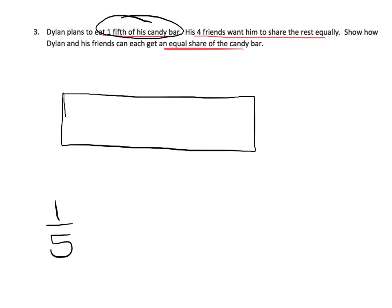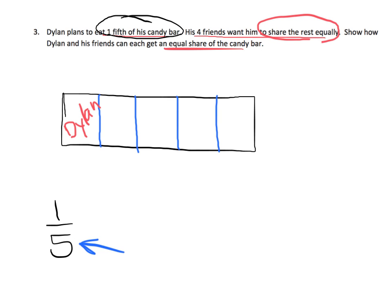Teachers, be aware: students are going to try to make five cuts, when really they need to make four cuts — one, two, three, four — in order to make five pieces. We only needed four cuts, so be aware that when we're talking about fractions we're talking about these intervals, not the cuts themselves. Here's Dylan's piece. Then his four friends each get one of the remaining pieces, so each of the five kids gets a share of the candy bar.